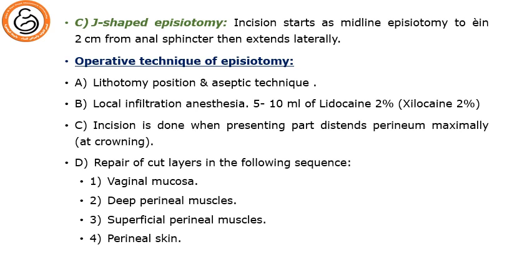The operative technique of episiotomy: we place the patient in the lithotomy position and perform an aseptic technique, then we infiltrate local anesthesia — five to ten milliliters of lidocaine two percent. The incision is done when the presenting part distends the perineum maximally, which means at crowning. The repair of each layer after delivery is started by the vaginal mucosa, then we go to the deep perineal muscle, then the superficial perineal muscle, then the perineal skin.